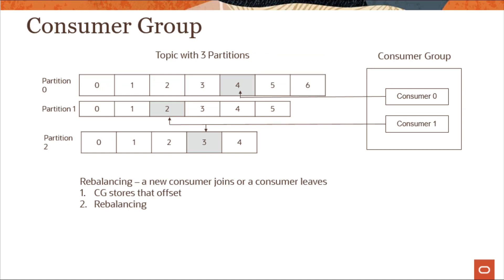Here's a graphical representation of what a consumer group looks like. This consumer group has two consumers: Consumer 0 is consuming messages from partition 0, and Consumer 1 is consuming messages from partition 1 and partition 2. Both consumers track where they are in consuming messages using the offset value. Any rebalancing — if a consumer leaves or a new consumer joins — is handled automatically.